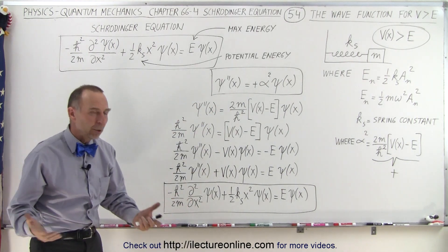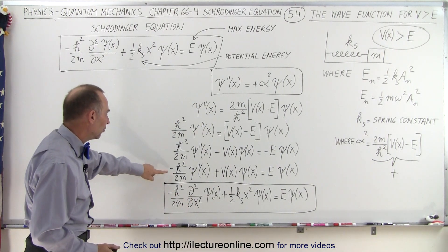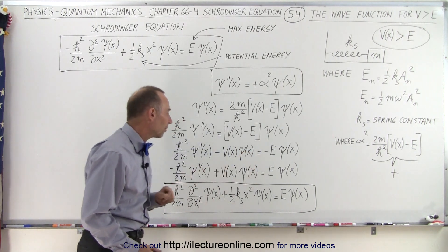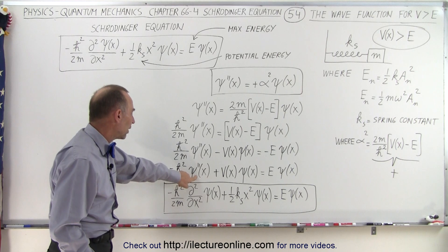Now we take the equation and multiply both sides by negative 1. So this now becomes negative. This now becomes positive. And this now becomes positive.